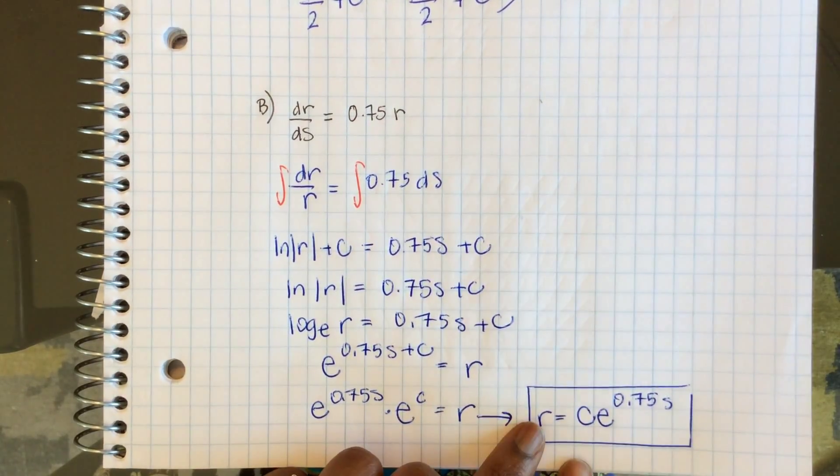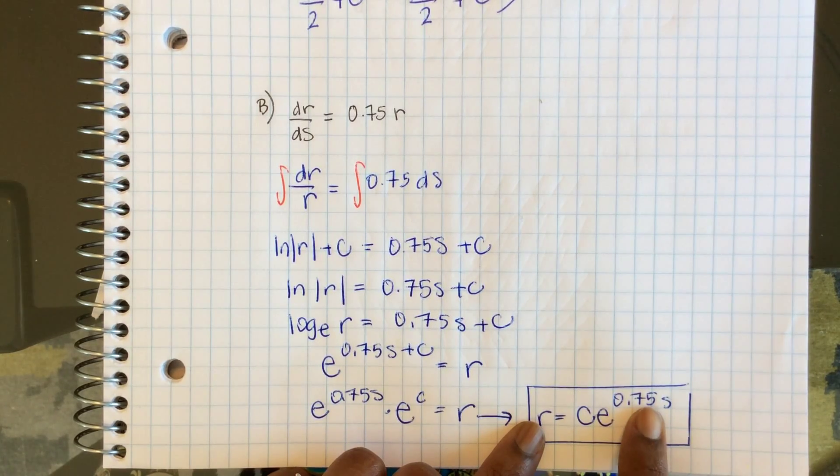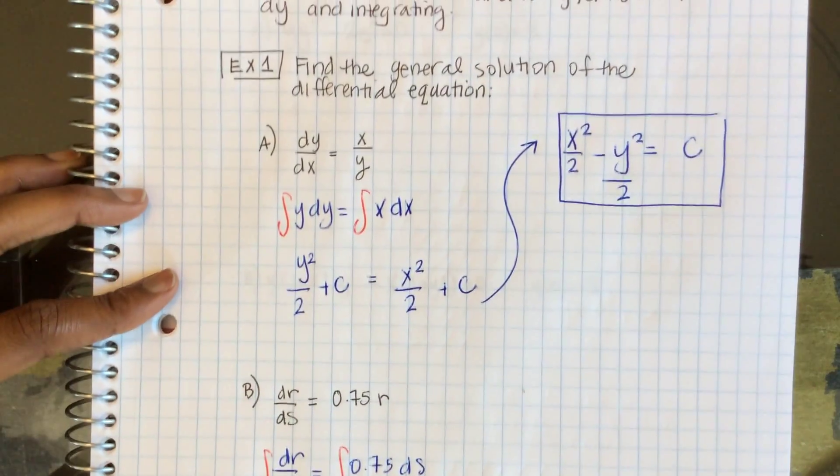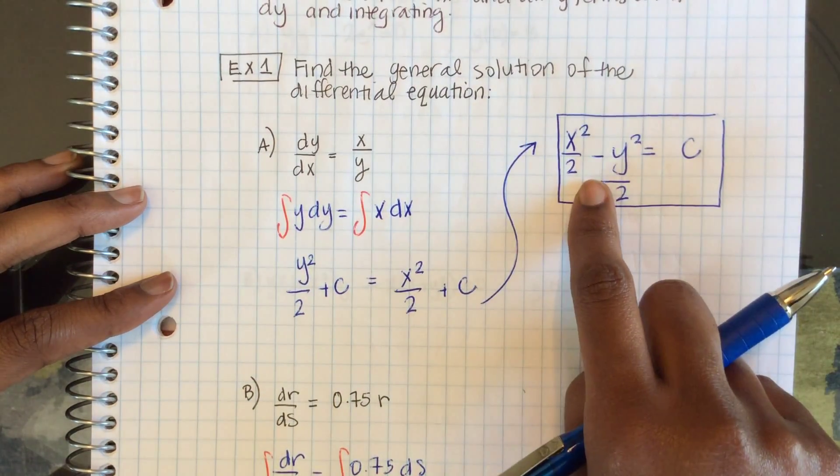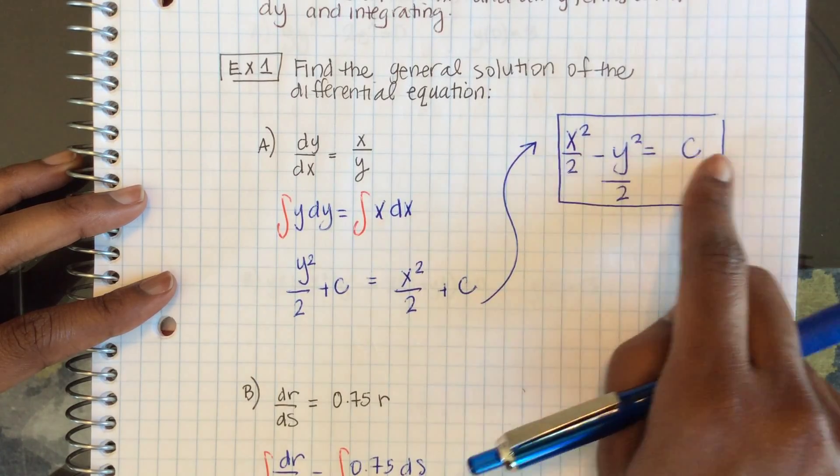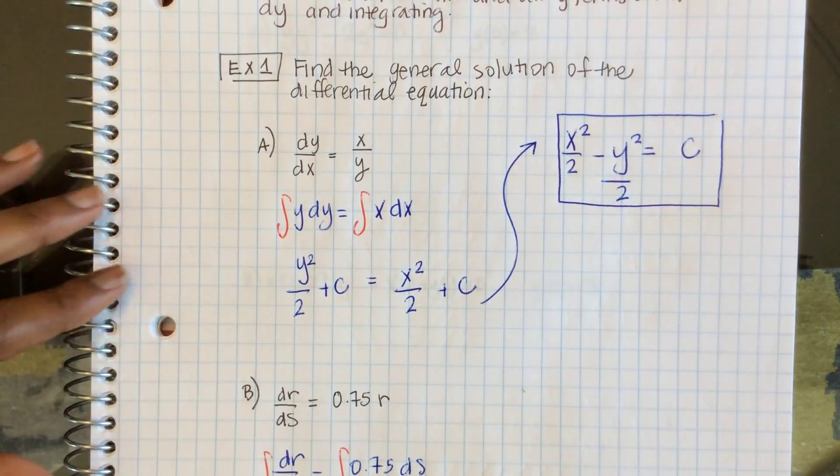So here we isolated r in terms of s for our final general solution. Here, since both x squared and y were squared, I created a conic section. All right, let's try some more.